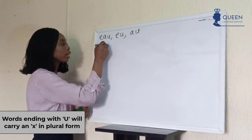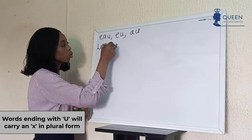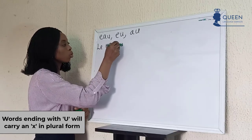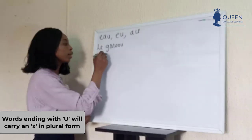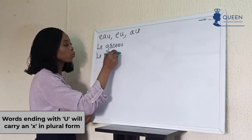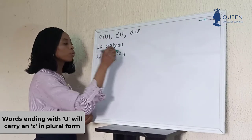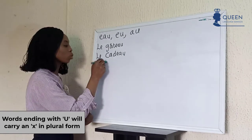Words like 'le gâteau,' 'le cadeau,' 'le château' — for these -eau endings, we add -x to form the plural.